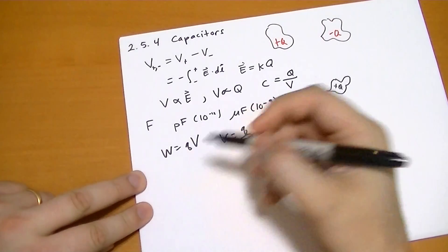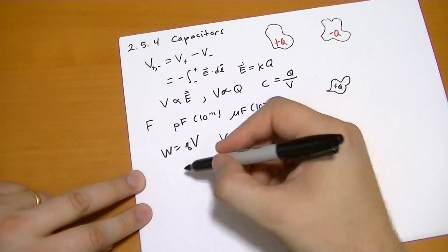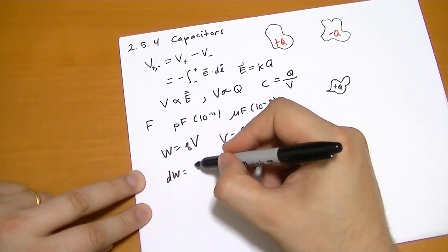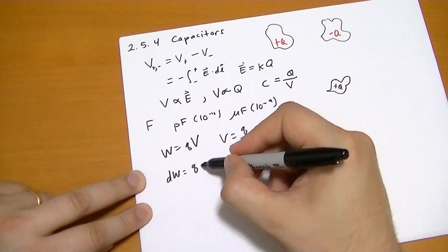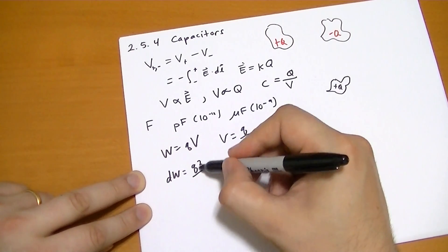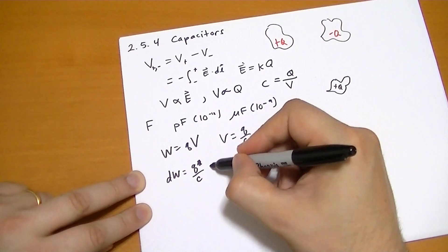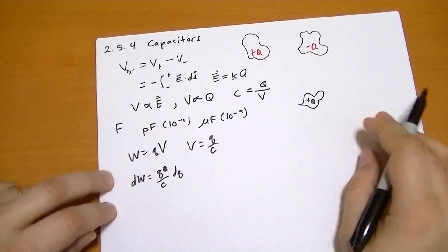So how much work does it take to move a little tiny bit of charge? The infinitesimal amount of work that we need is just q times V, which is q over C. Oh, I'm sorry, q over C is the potential, and we're moving a tiny bit of charge across that potential.